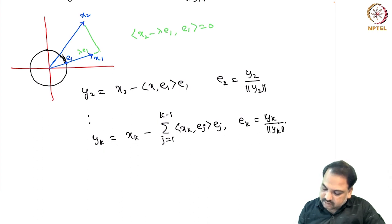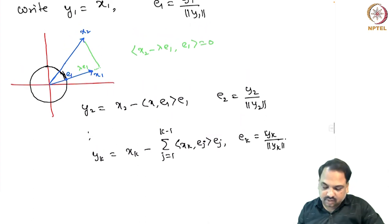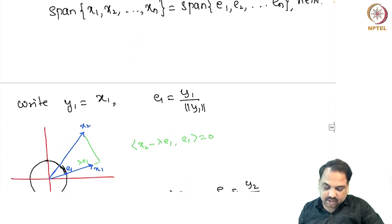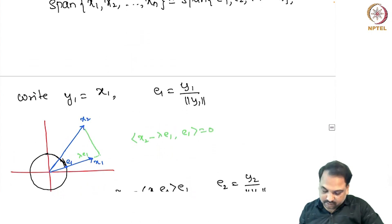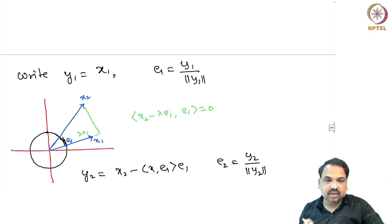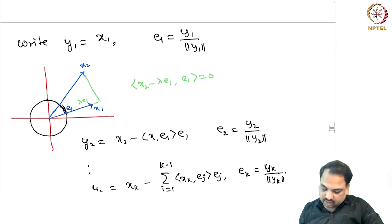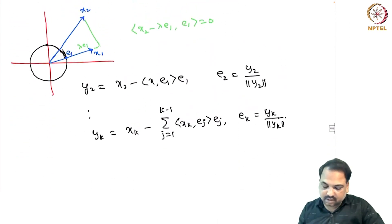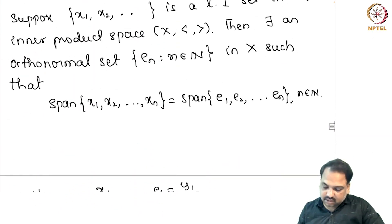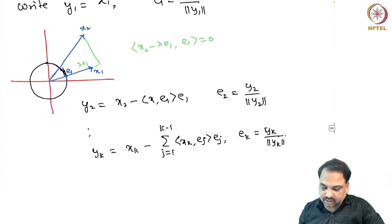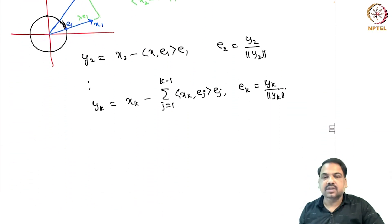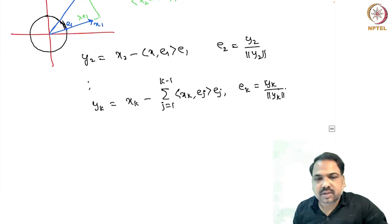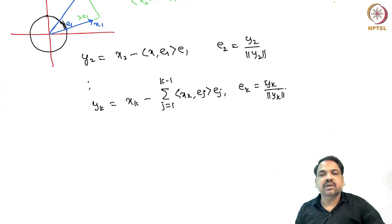From the beginning, the span of {x1} equals the span of {e1}, the span of {x1, x2} equals the span of {e1, e2}, and so on. In this way we can actually get the result that we want. This is the way we can construct an orthonormal set from a linearly independent set.